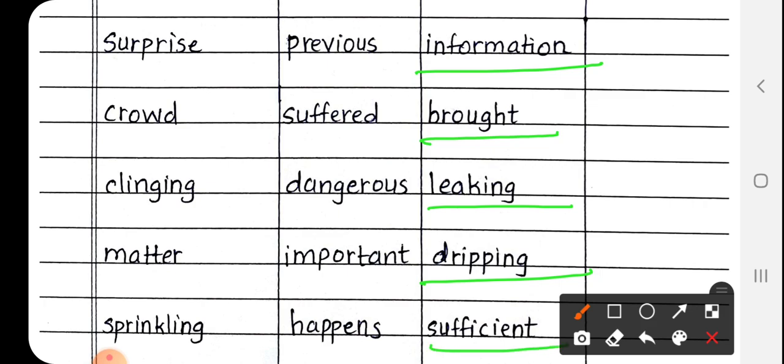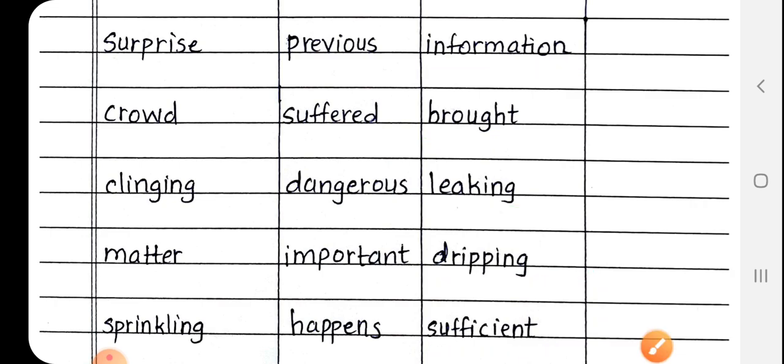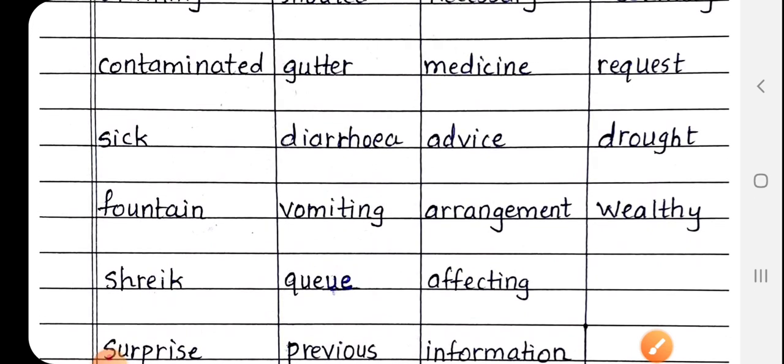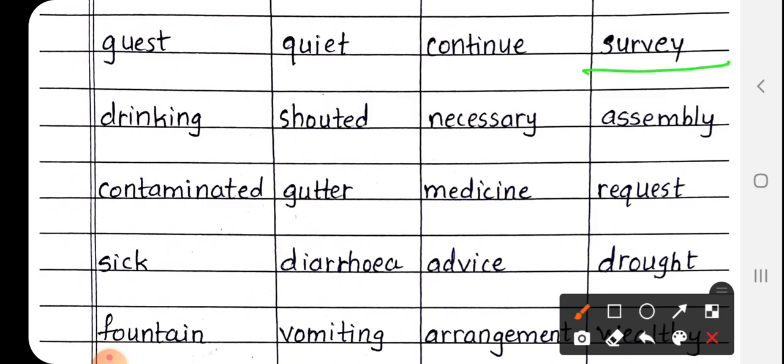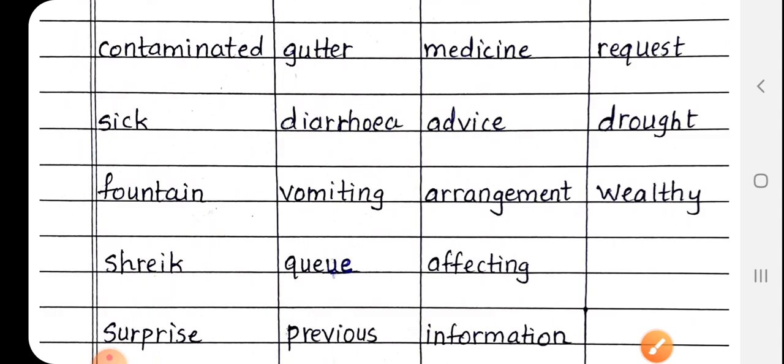Next is sufficient, S-U-F-F-I-C-I-E-N-T. Sufficient matlab paryapta. Next is survey, S-U-R-V-E-Y. Survey matlab sarvekshan karna. Next is assembly, A-S-S-E-M-B-L-Y. Assembly matlab sabha. Next is request, R-E-Q-U-E-S-T. Request matlab nivedan karna. Kisi se hum vinanti karta hai, usse kehte hai request.